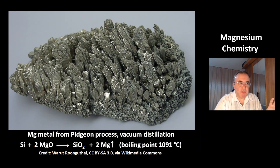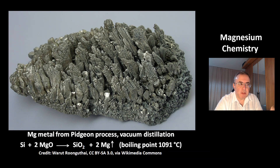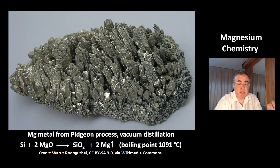This is a picture of magnesium metal from the Pidgeon process — one of the processes to produce magnesium metal. This is a reduction of magnesium oxide with silicon, which produces silicon dioxide and elemental magnesium. Magnesium has a boiling point of 1,091°C, which is why vacuum distillation is used — it gives a lower boiling point and requires less energy.